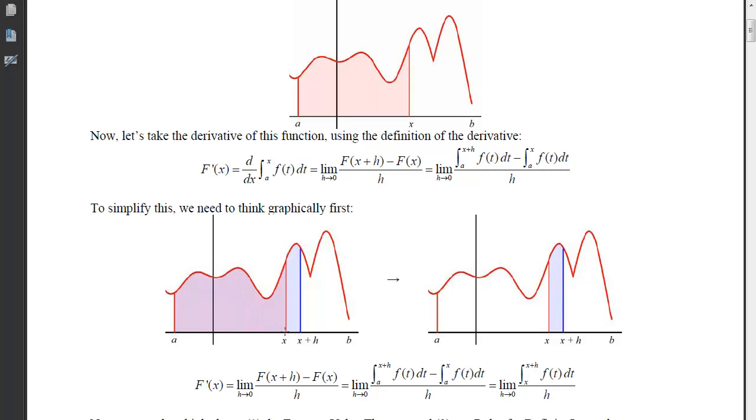Now if I subtract the purple region from the entire region that I had at the beginning, then we can see that what's left over is this little tiny strip. So I've written that analytically here, and it says F'(x), which was that limit, which was this limit, can be replaced with the limit as h approaches 0 of the accumulation just from x to x plus h of that little f(t)dt all over h.